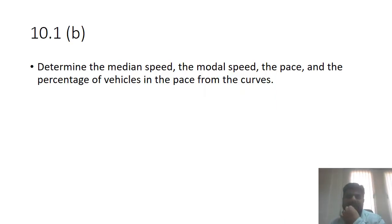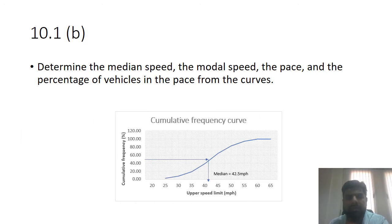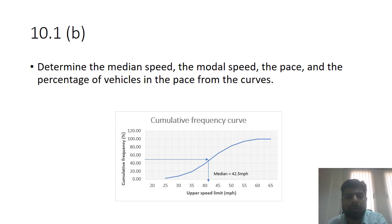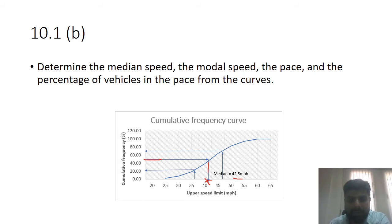The second part asks us to extract the median, mode, pace, and percentage of vehicles in the pace from these curves. The median is taken from the cumulative frequency curve — it is the middle value, at the 50th percentile. You draw a horizontal line from 50% on the y-axis to the curve, then drop a perpendicular to the x-axis. The intersection gives the median value, which is 42.5.